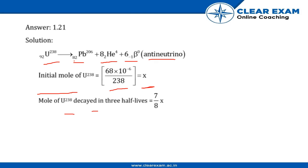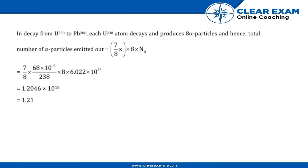Mole of U-238 decayed in three half-lives equals (7/8)x. In decay from U-238 to Pb-206, each U-238 atom decays and produces 8 alpha particles, and hence the total number of alpha particles...